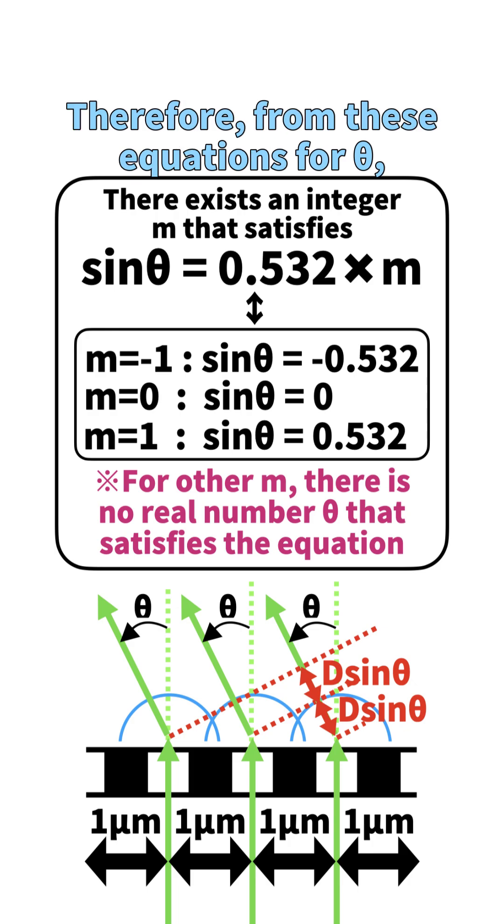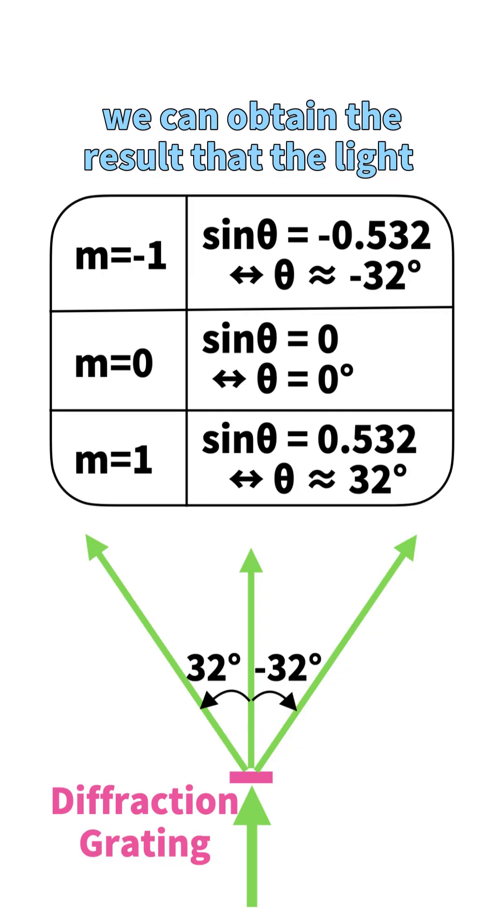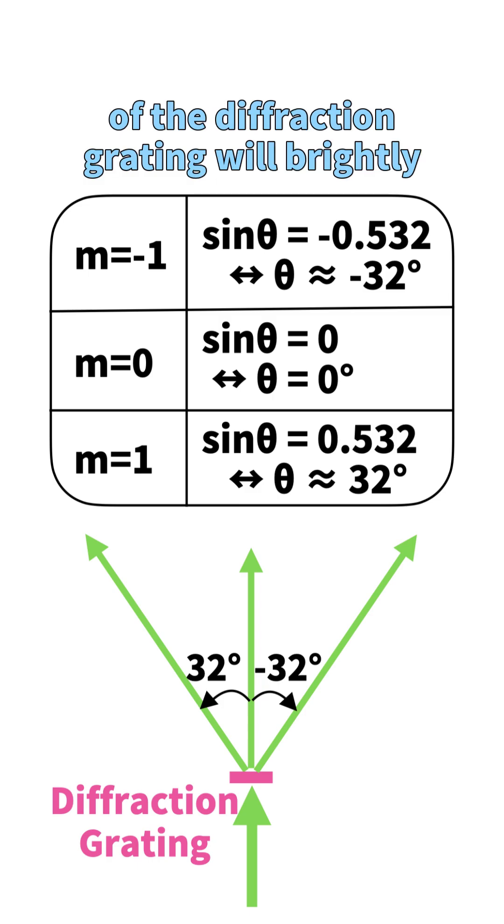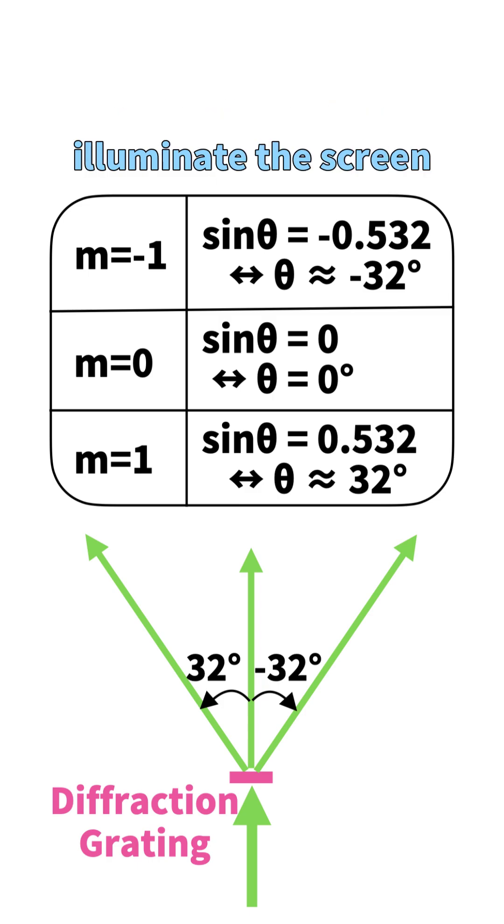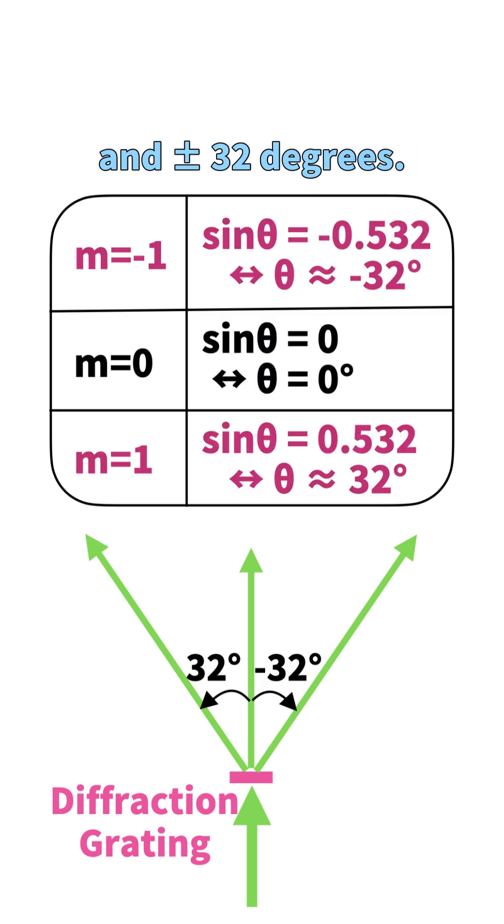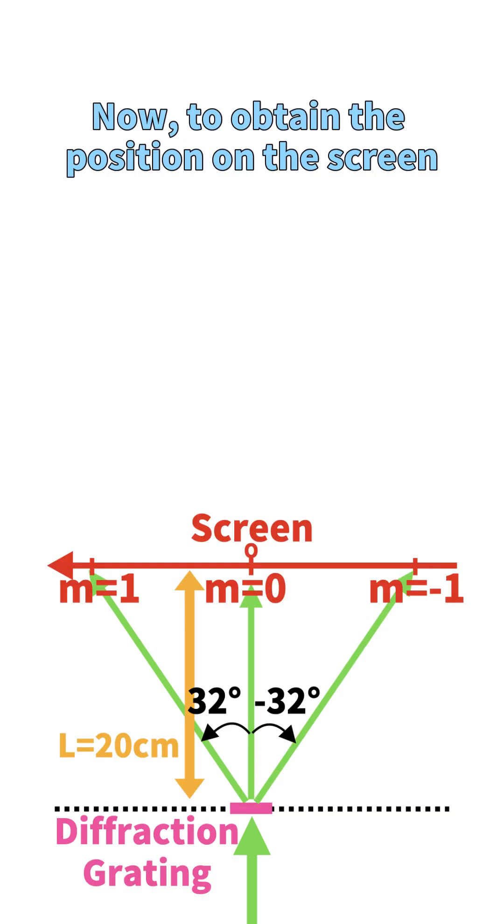Therefore, from these equations for θ, we can obtain the result that the light passing through the openings of the diffraction grating will brightly illuminate the screen at the angles of 0° and ±32°.